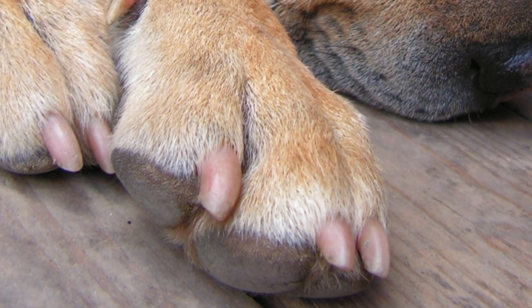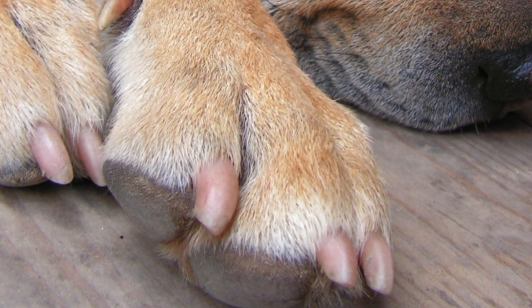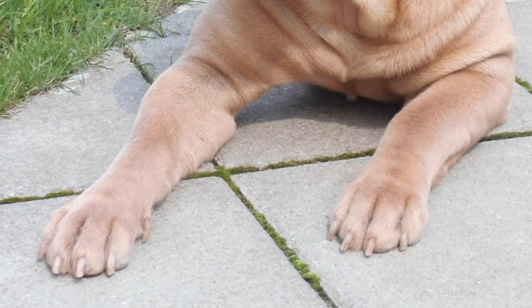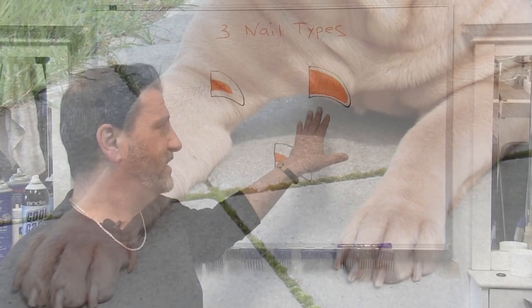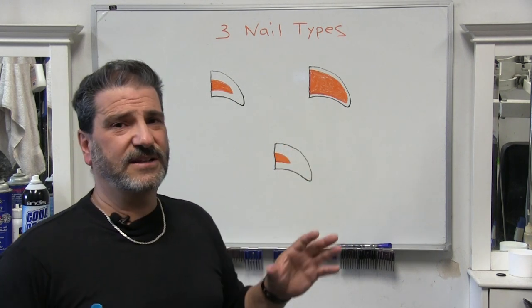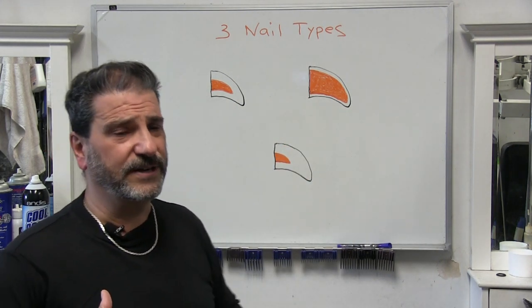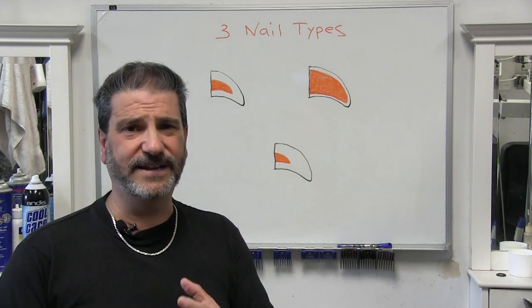You're going to see this nail a lot in, say, like your Sharpays, your Weimaraners, your Chow Chows, even like your English Bulldogs. I've seen this a lot even in like Dalmatians. And this nail is just—it's a little jarring. You'll notice this nail a lot because, especially if it's a clear nail, you're going to see that it's very pink. It's a very pink nail.